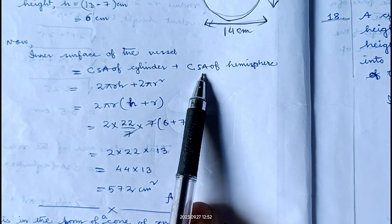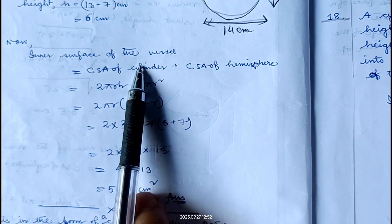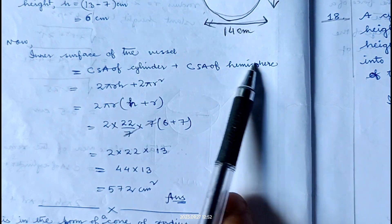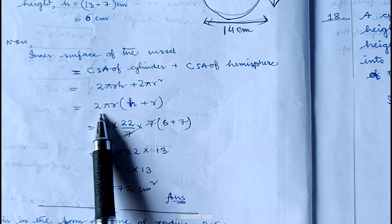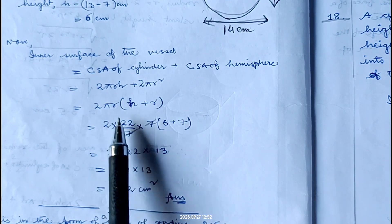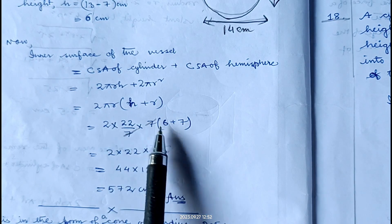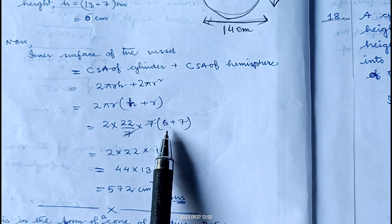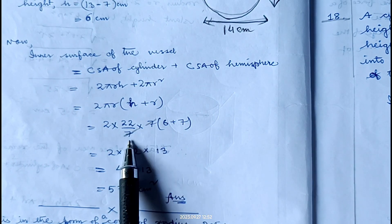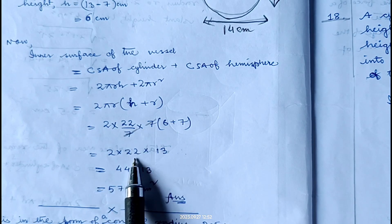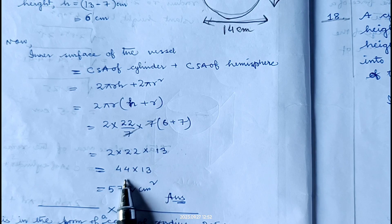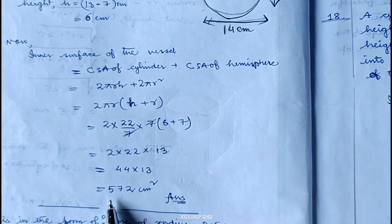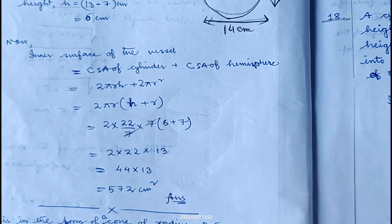Inner surface area equals 2 pi r h plus 2 pi r squared. Taking 2 pi r common gives 2 pi r into (h plus r). Pi is 22/7, radius is 7, so the 7s cancel. We get 2 into 22 into (6 plus 7) equals 44 into 13 equals 572 centimeter square. Therefore inner surface area of the vessel is 572 centimeter square.